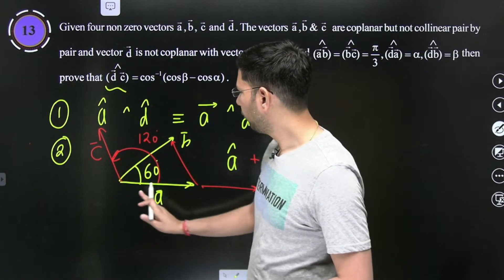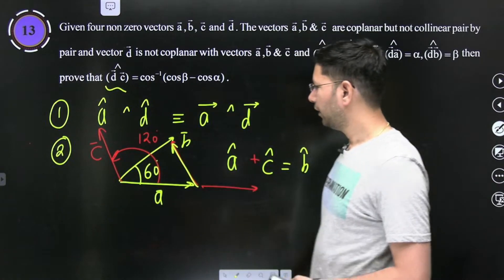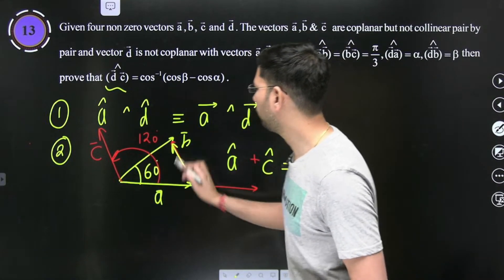Aur kaun sa, kis ke, kis taraf hoga, wo bhi aap dekh lenge. A idhar hai, b us ke saath 60 hai. Aur c agar ye ke saath 120, to c ko parallel direction mein shift kiya, ye c cap hoga ya aapka. Aram se dikhara hai, this plus this is equal to this.